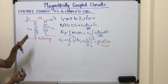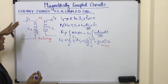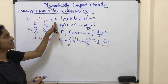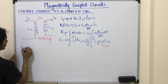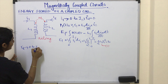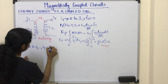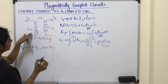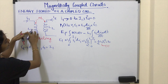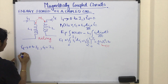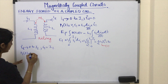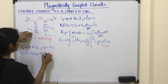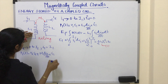Now I1 has reached a constant value I1, and I am going to increase the value of I2 from 0 to I2 while maintaining I1 as constant. In this case, a mutual voltage will be generated in coil 1 due to the change in current in coil 2. Therefore, total power is V2·I2 plus mutual voltage M·(dI2/dt)·I1.